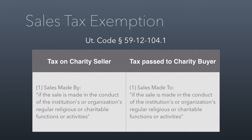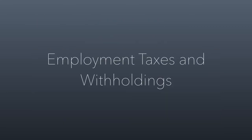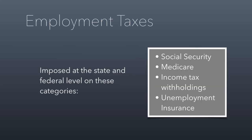That's basically how sales tax exemption works, not only in the state of Utah but pretty much every other state. Now let's talk about the employment taxes and other withholdings. Every employer has to pay employment taxes imposed at both the state and federal level — usually to fund Social Security and Medicare. Employers are also required to do income tax withholdings from paychecks.